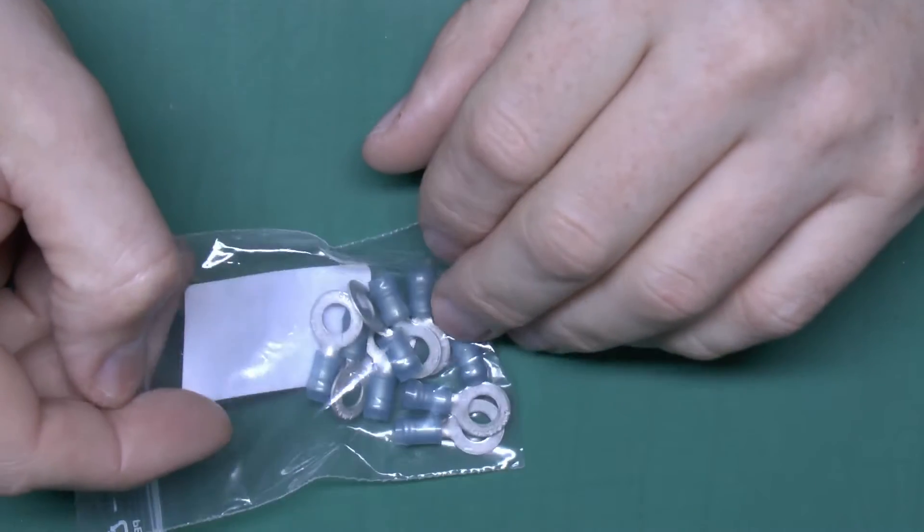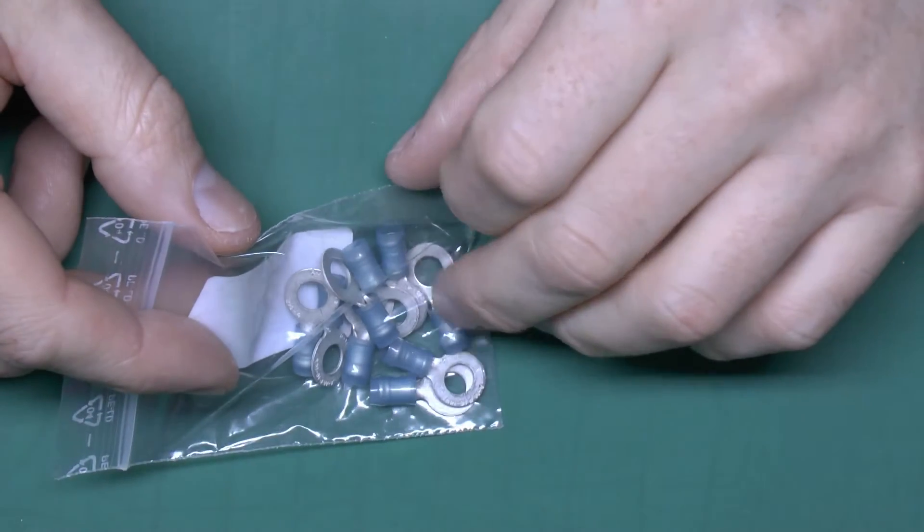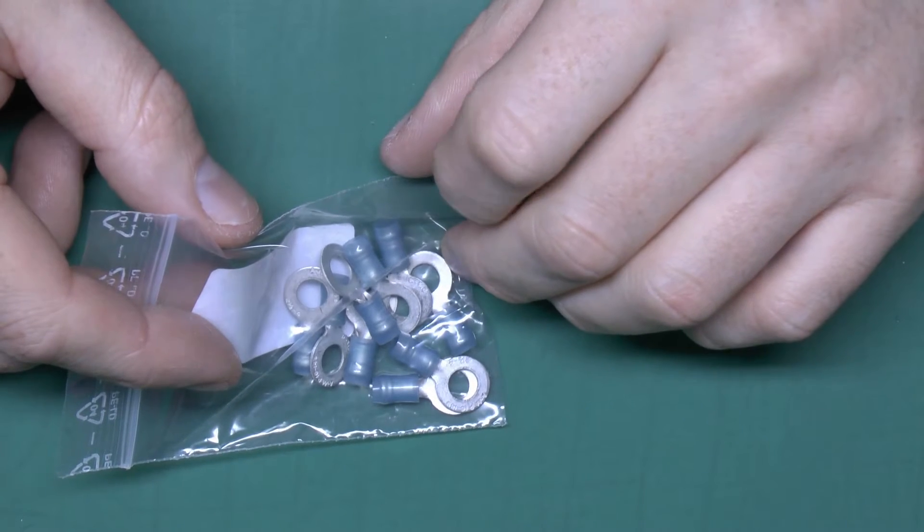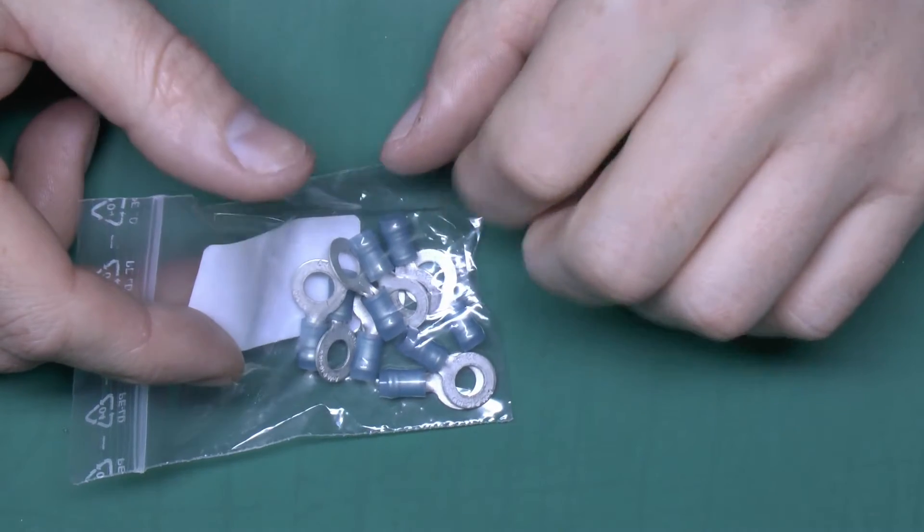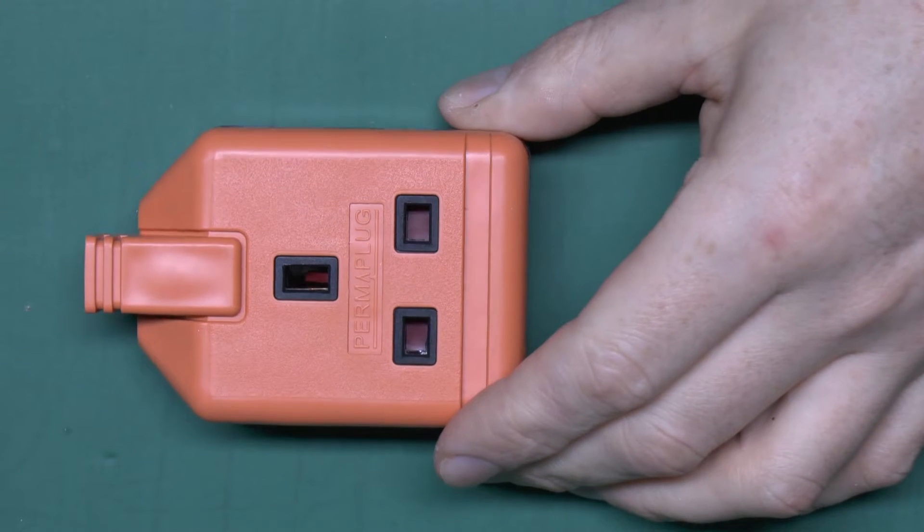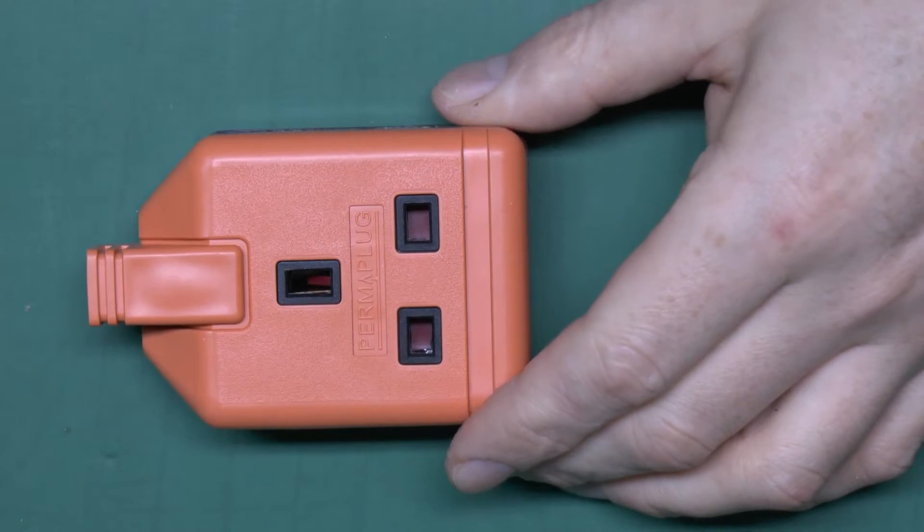For the internal wiring we've got some of these ring terminals. These are sized quite large because they have to fit over the rather big terminals inside the device and there's just a crimp on connection for the wiring. I'll also be replacing all of that wiring inside. The input and output will just be a length of 3 core flex. Here's a socket to go on the end of that and there'll be a corresponding plug to go on the input side of course.